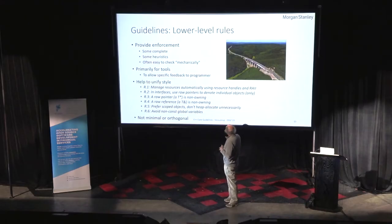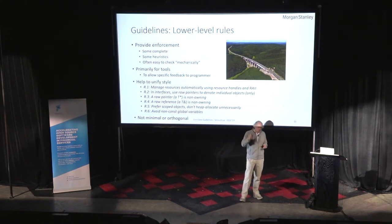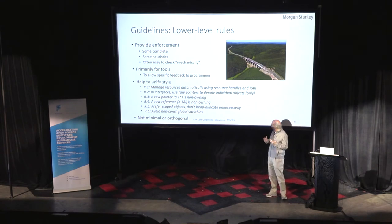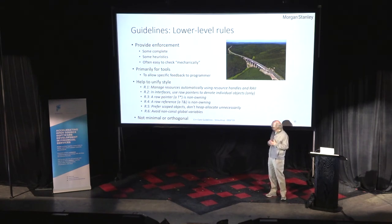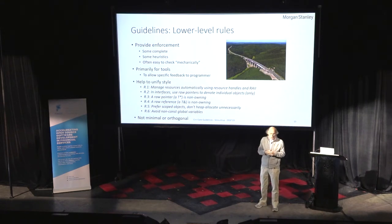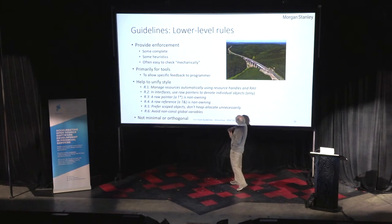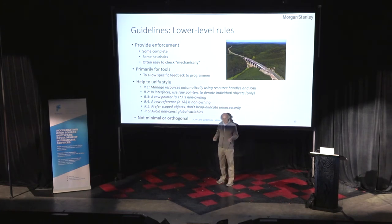The examples are here. 'Manage resources automatically using resource handles and RAII' — that's probably the most important rule of them all. We look for things that are acquired and see if they're released, mostly through resource handles. We don't have a raw pointer that just points but doesn't own something and isn't an array.